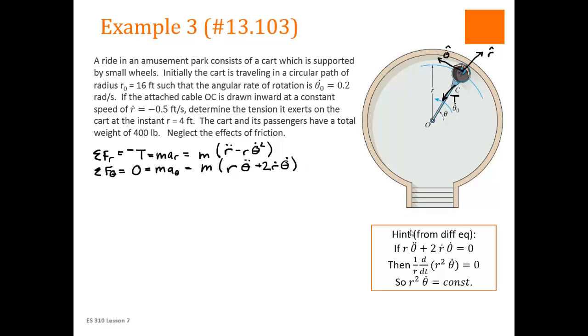Now we need to use this hint that's in the orange box here. This hint is coming from differential equations. Which I'm guessing none of you have had. But basically you see this. This is equal to zero. So the mass goes away. So that means the stuff in the brackets here has to equal zero.